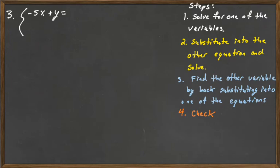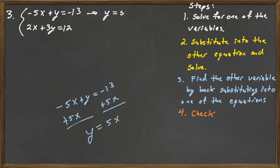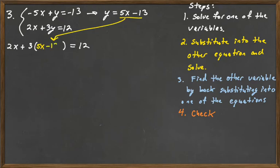Our next system is negative 5x plus y equals negative 13, and 2x plus 3y is equal to 12. You can solve either equation for one of the variables, but look for an x or y all by itself so you don't have to do too much work. So for negative 5x plus y equals negative 13, all we've got to do to solve for y is add 5x to both sides, and we get y is equal to 5x minus 13. Now we're going to substitute it into the other equation: 2x plus 3, and then replace y with 5x minus 13, and that's going to be equal to 12.